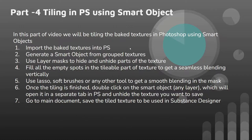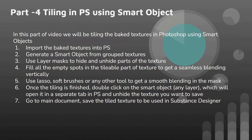You can use any version of Photoshop — the version doesn't matter. We will use a specific function to generate smart objects, then use layer masks to hide and unhide parts of the texture to get a very detailed amount of tiling. We cannot use tools like clone stamp because we are working in different channels — the color map, normal, ambient occlusion, roughness, curvature, and other maps. The only way is using a smart object, and we can use lasso tools, soft brushes, or other tools to get smooth blending.